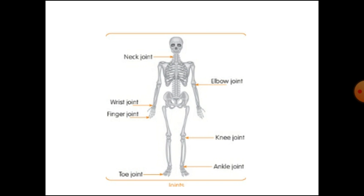Neck joint, elbow joint, wrist joint, finger joint, knee joint, ankle joint and toe joint. The neck joint helps us turn and see things.